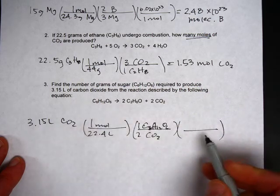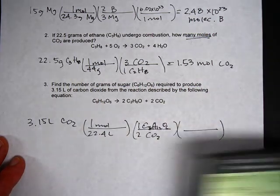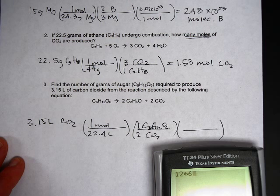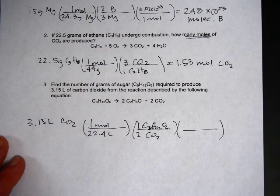And you want to answer in grams. So put the molar mass of sugar right here on top. So 12 times 6 plus 16 times 6 plus 12. 180.